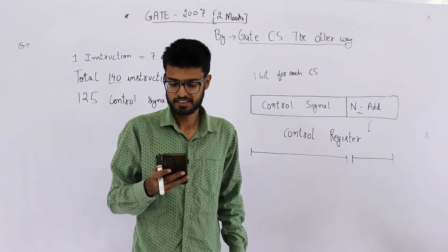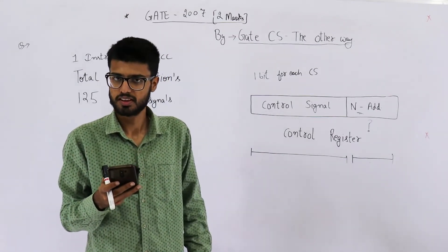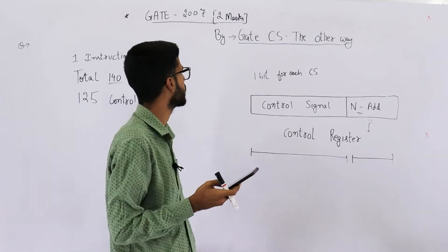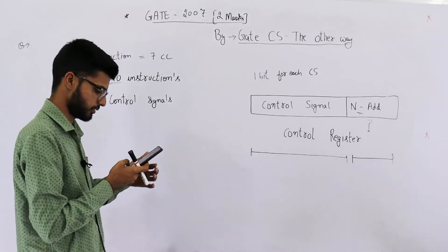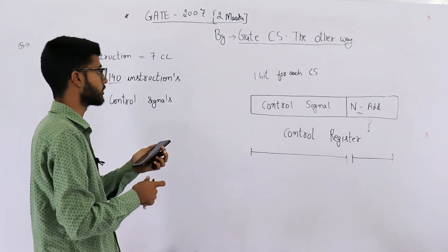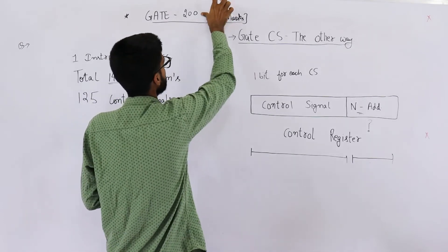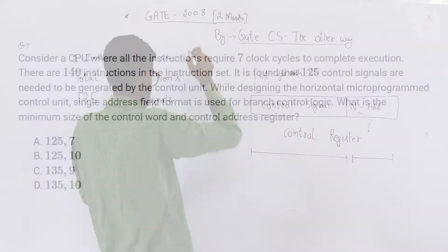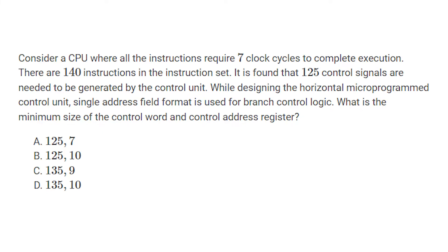Welcome back dear students, let's now see this question from 2008 exam. It's for two marks and the statement reads: consider a CPU where all the instructions require seven clock cycles to complete execution.